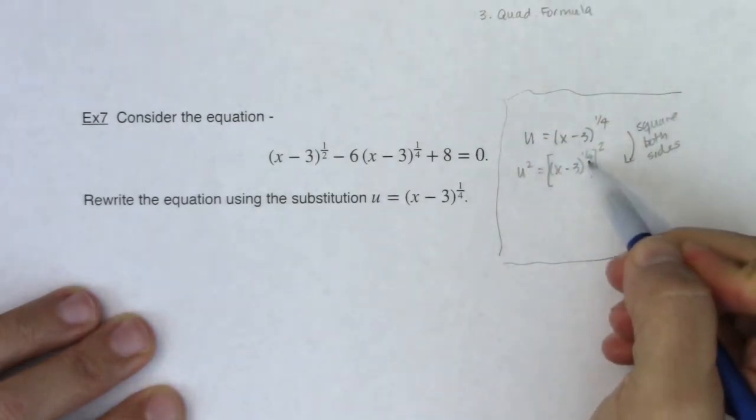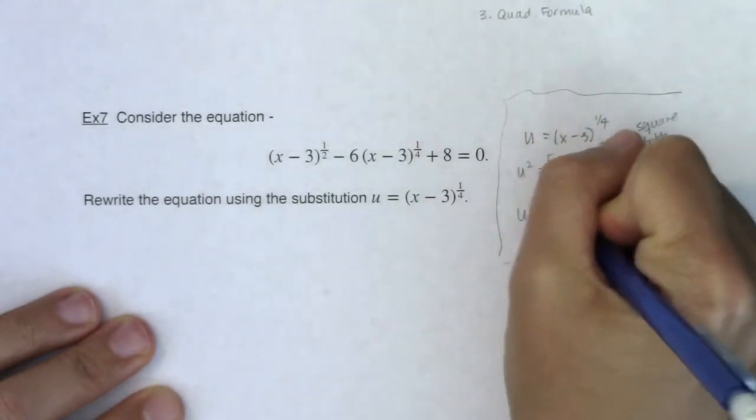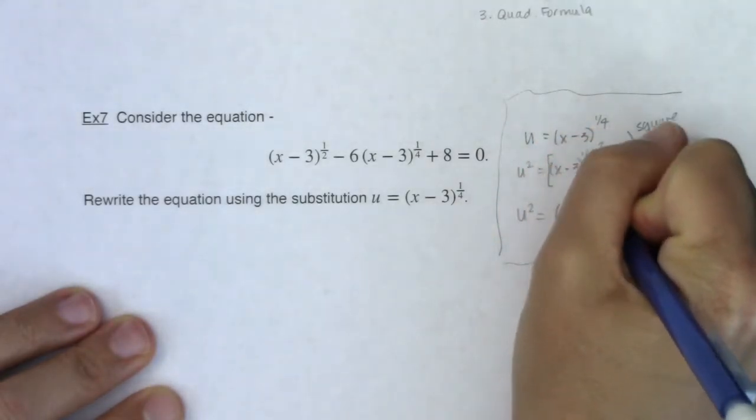And what do we do when we have a power raised to a power? Well we multiply those exponents. 1/4 times 2 is 2/4 which is 1/2. So I get u squared is equal to x minus 3 to the 1/2.